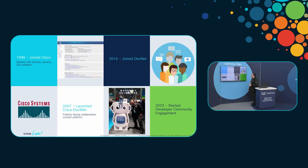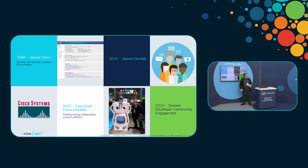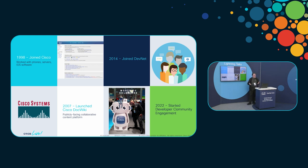I'm Paul Zimmerman. I've been with Cisco for quite a long time. Back in 1998, I joined Cisco and started working with servers, phones, and iOS software. The logo looks a lot different than it looks today. In 2007, I started working on my first collaborative community project — I was program manager for the Cisco doc wiki, an externally facing wiki that we collaborated on. We built a whole moderation system and user base.